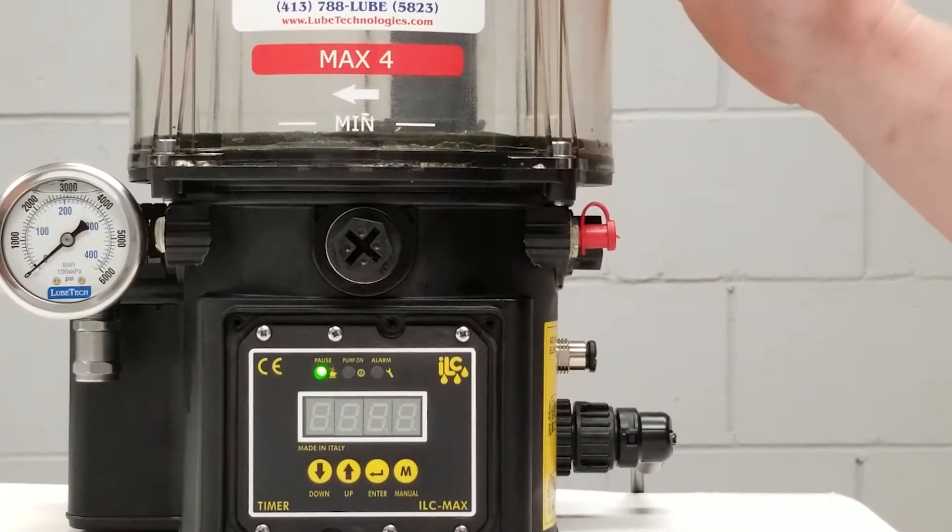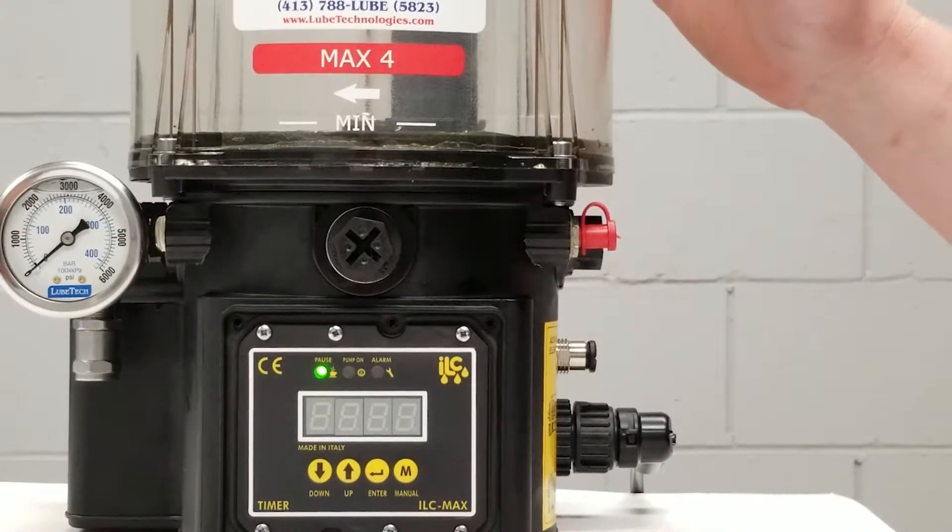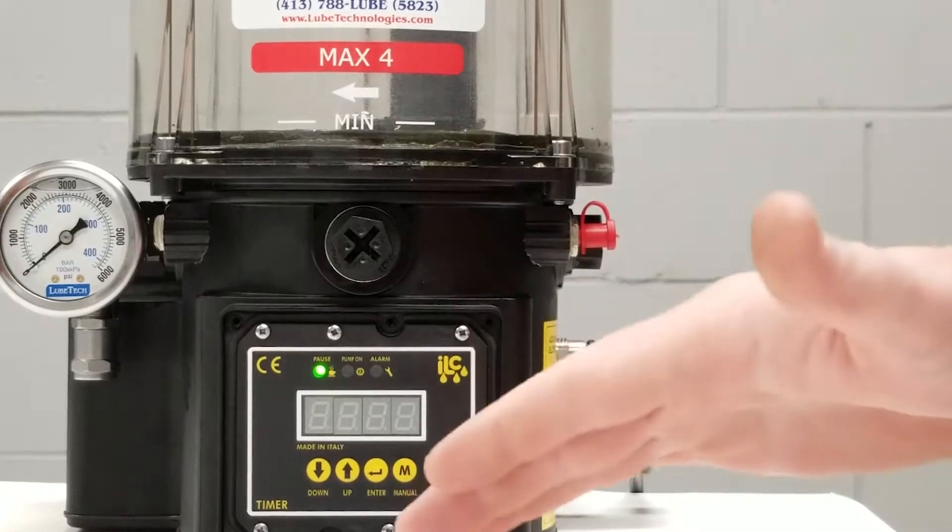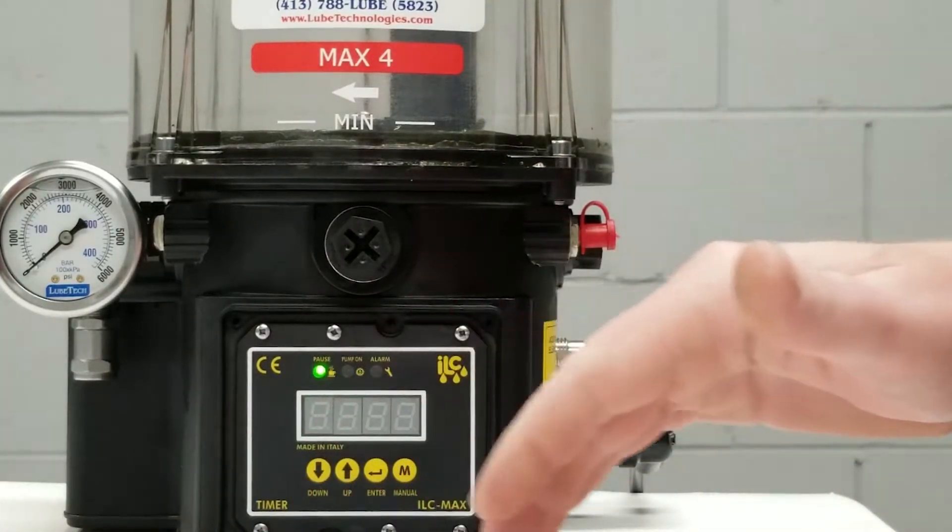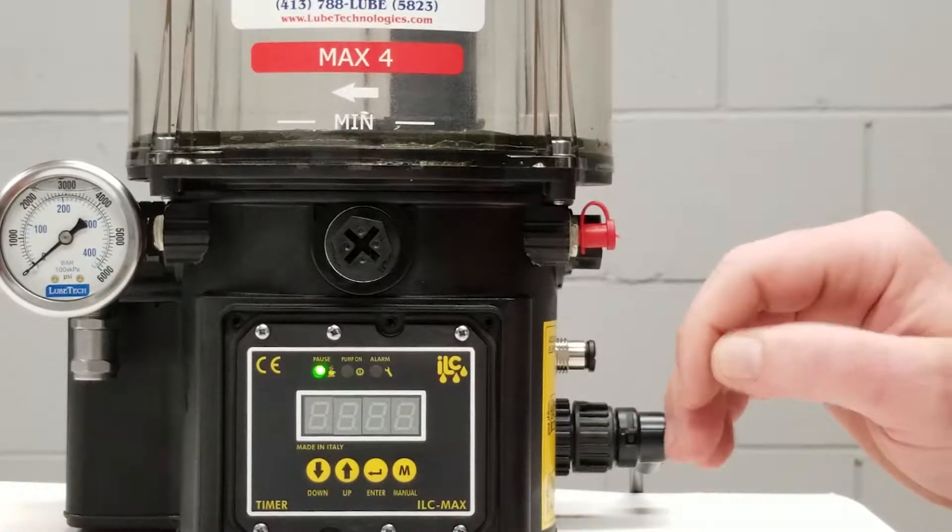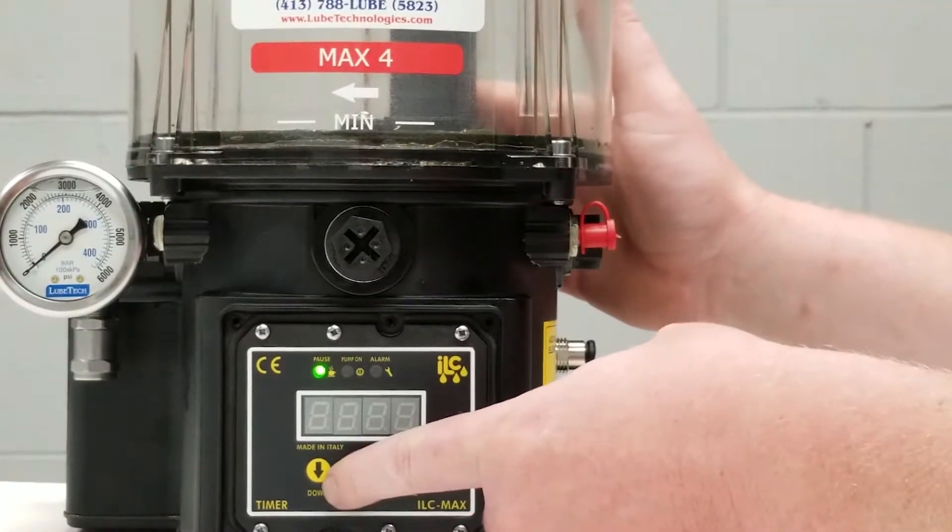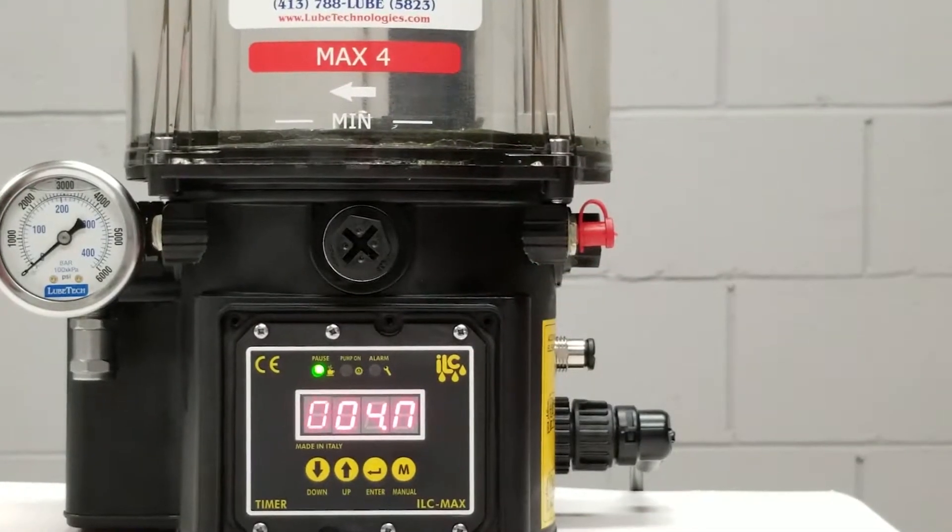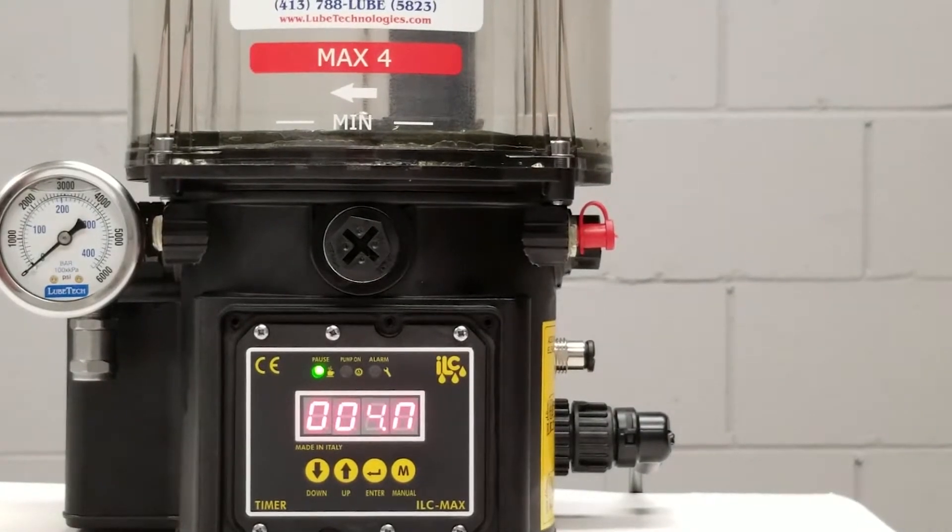To get into the programming mode we have to have the ignition on which means we need to have power to the pump and again you would know if you have power by seeing the LED status. One of them should be on. If your screen is blank and you want to know where we're at, you simply press the up arrow key and this will make our screen illuminate. This right now tells us that I have four minutes left in my delay time until this pump comes on and runs again.